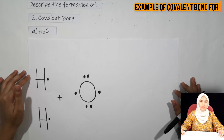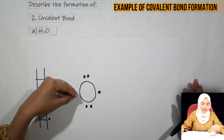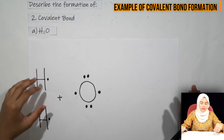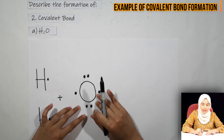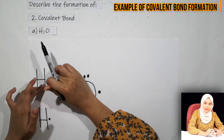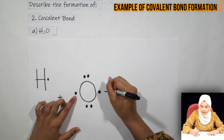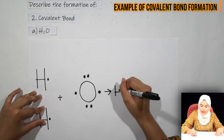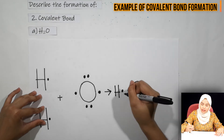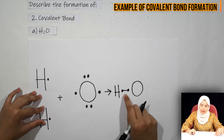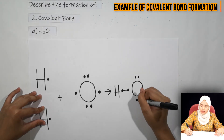Next, how to describe the formation of covalent bond. Sekarang ni saya nak ambil contoh H₂O. Covalent bond ni terbentuk bila atoms tu share a pair of electrons. Di sini kita tahu hydrogen ada 1 valence electron and oxygen ada 6 valence electrons. One of the valence electrons of hydrogen akan share dengan 1 elektron di oxygen. Dia akan share kat 2-2 belah ni. H ni akan share dengan oksigen punya 1 valence electron, dan dia akan membentuk bond di situ. This is called a bonding pair, or a single covalent bond.